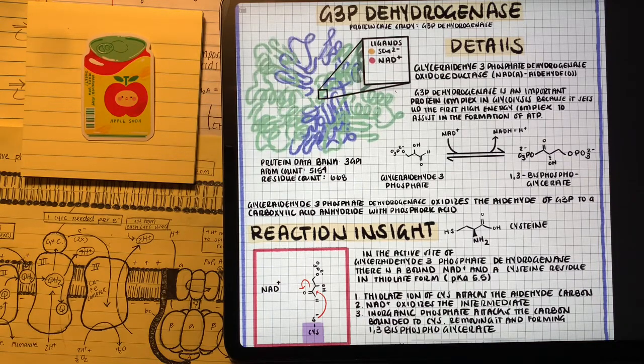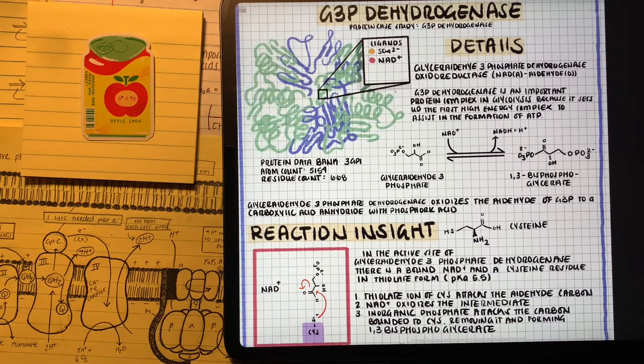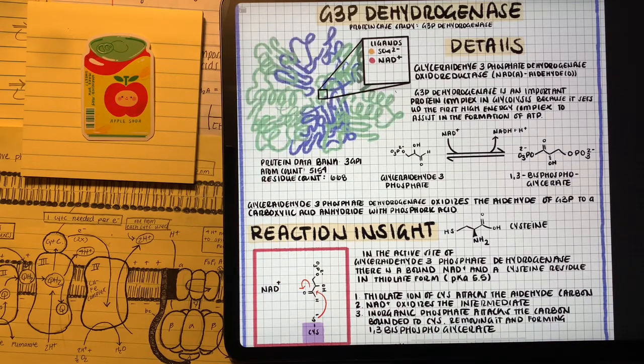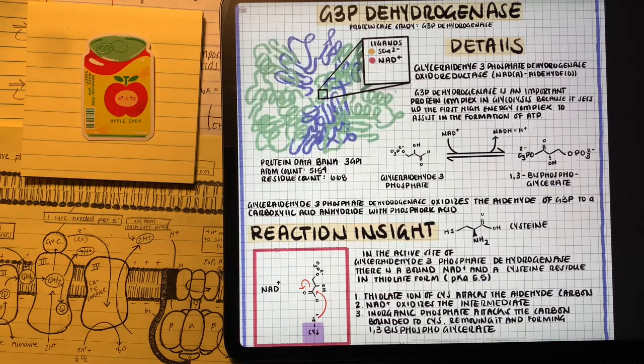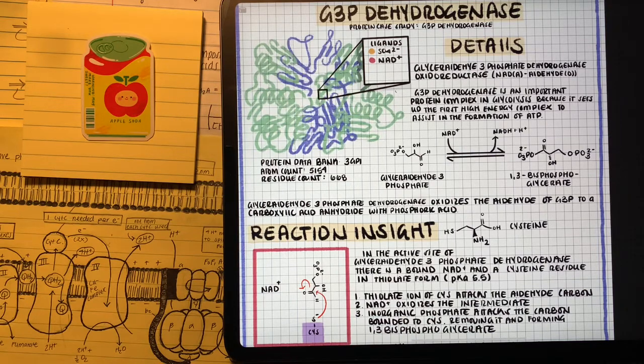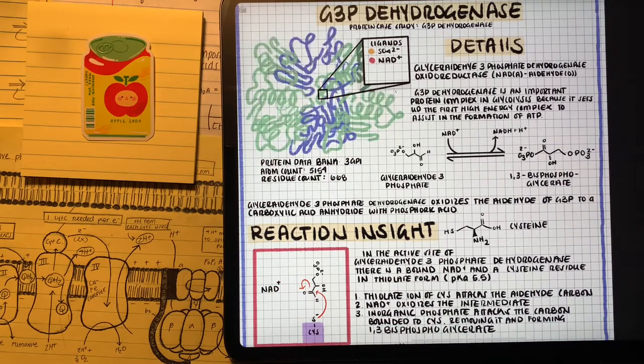This reaction focuses on the oxidation of the aldehyde of G3P to a carboxylic acid anhydride with a phosphoric acid. Remember, we just formed two G3Ps. So at this step in glycolysis, we have formed two 1,3-bisphosphoglycerates.